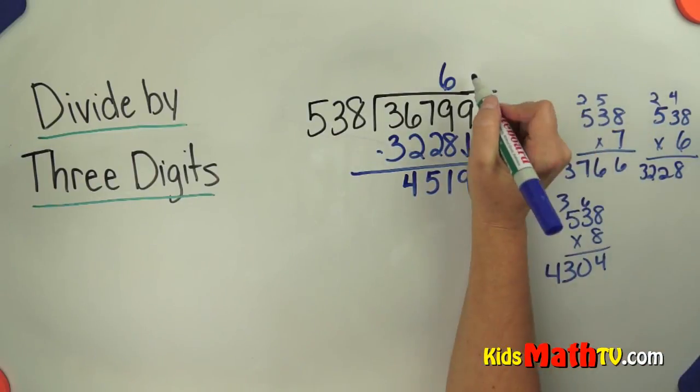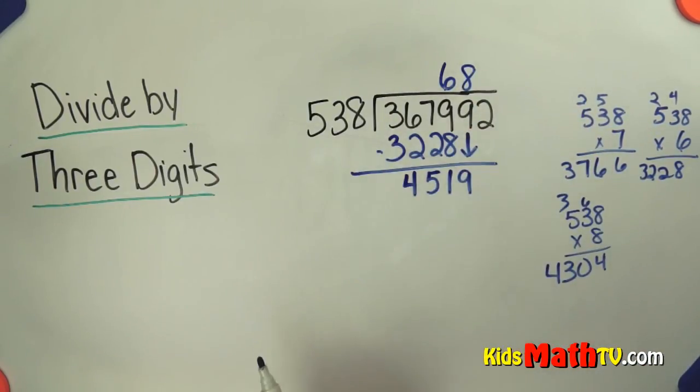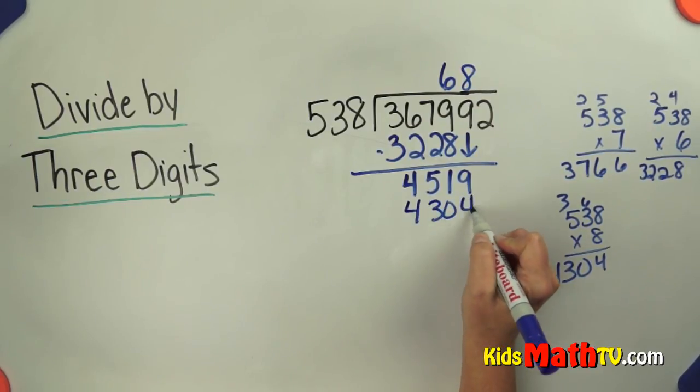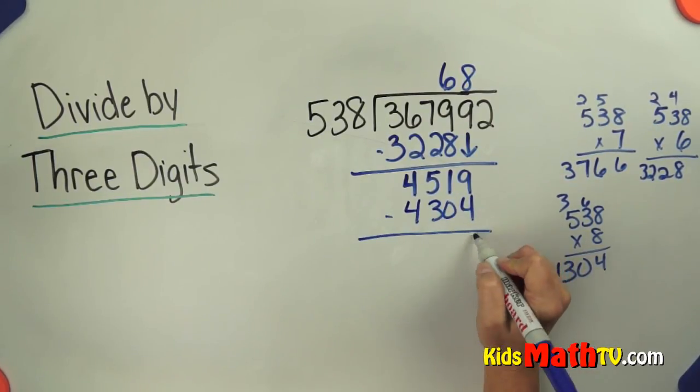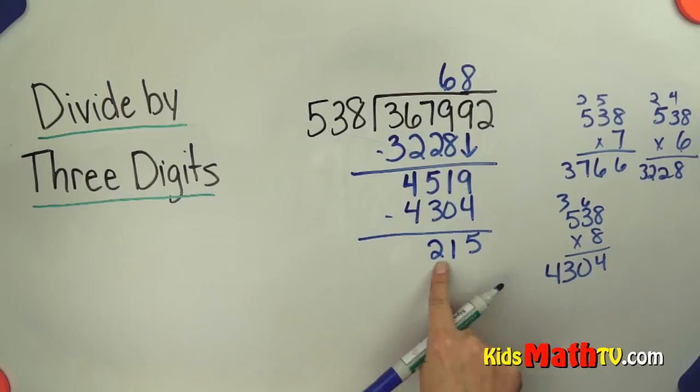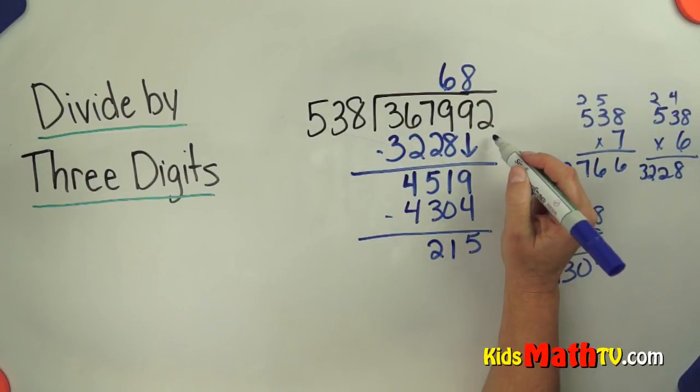So 8 times 538 is 4,304. Now I subtract 5, 1, and 2. Again, my remainder here, what I subtracted is smaller than this. So it's fine.